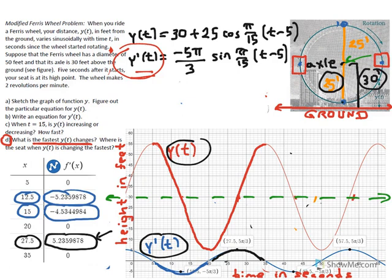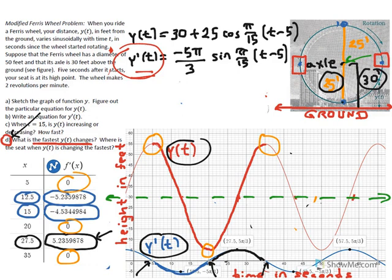At the time values t = 5, 20, 35, and so on, the derivative equals 0. This means there is no instantaneous change in the height of the seat at those moments — the seat is either at the highest point or the lowest point of the ferris wheel, making the transition from rising to falling or falling to rising.